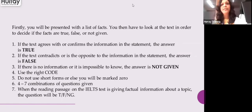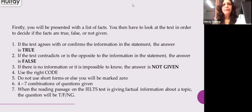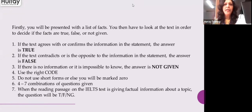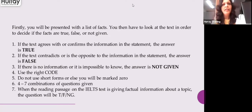For True, False, Not Given questions, you will be presented with a list of facts — that is why the question is either true, false, or not given. Whereas if it is Yes, No, Not Given, the question depends on the opinion of the writer. If the writer thinks it's yes, then you write yes. If the writer thinks it is not a fact, you write no. Otherwise, you write not given. These are all factual texts.